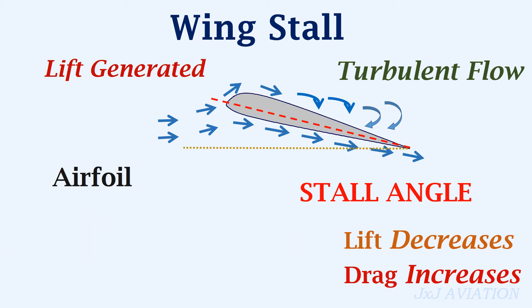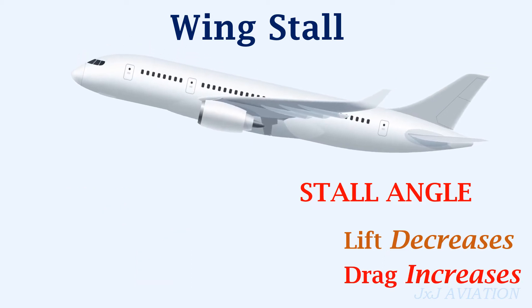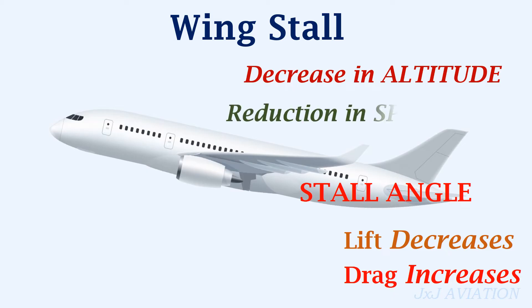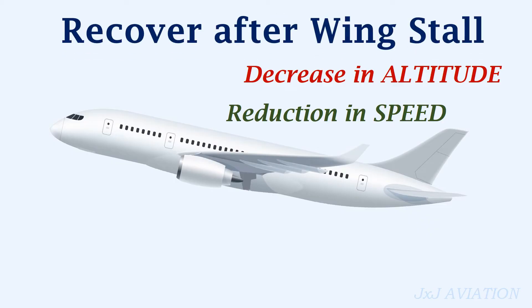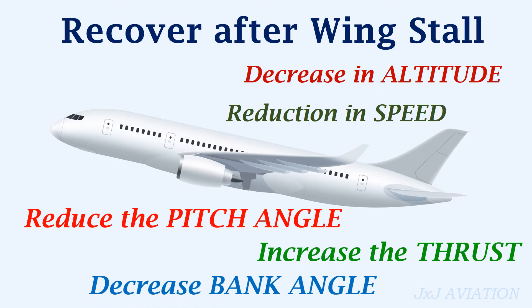A graph plotted between lift coefficient and the angle of attack would look like this, and this point represents the stall angle. Because of the airfoil or wing stall on the aircraft, this will lead to a decrease in altitude and a reduction in speed. To recover an aircraft after a stall, the pilot has to reduce the pitch angle of the aircraft, increase the thrust, and slowly reduce the bank angle to zero, if the aircraft had stalled during a roll.